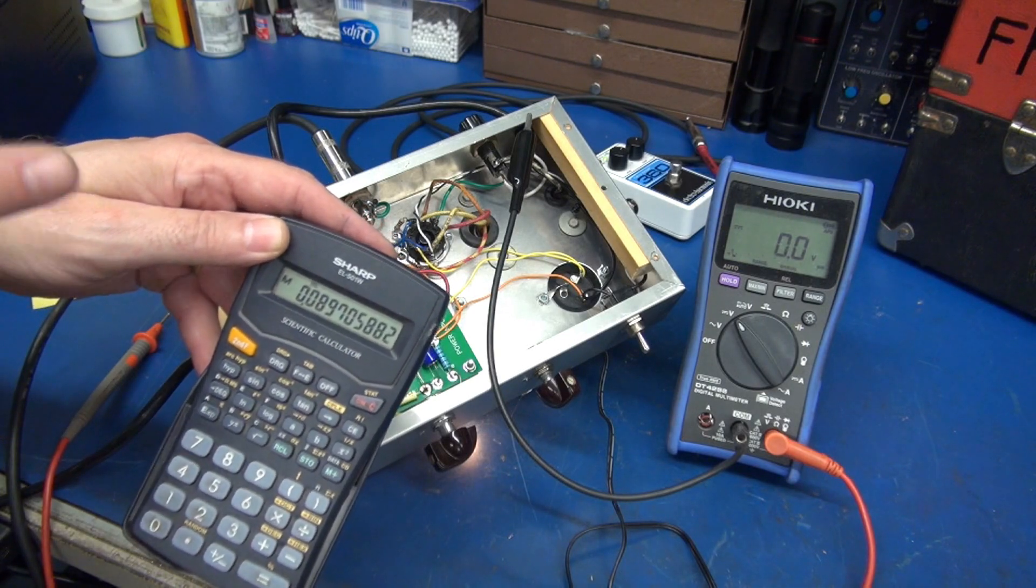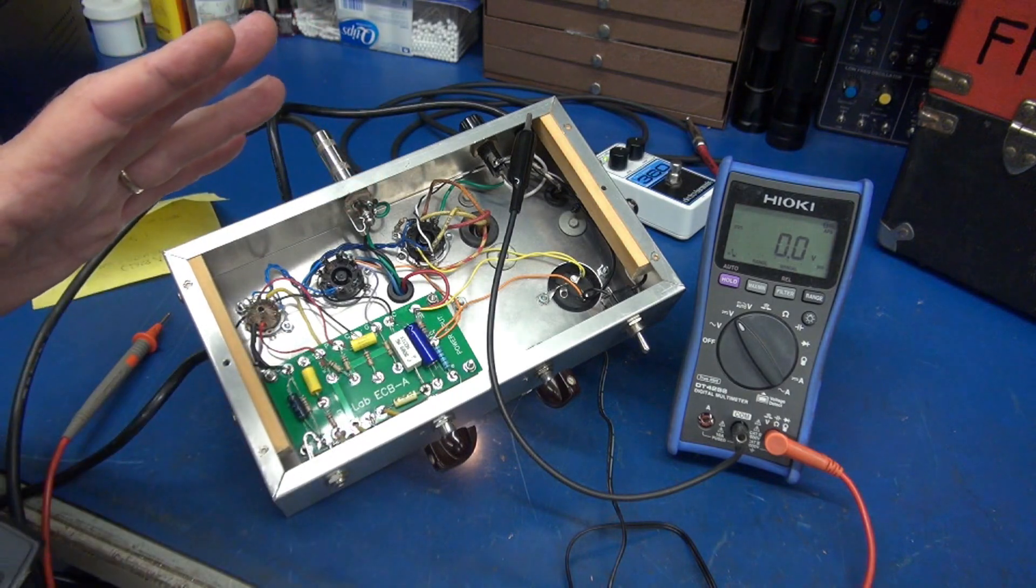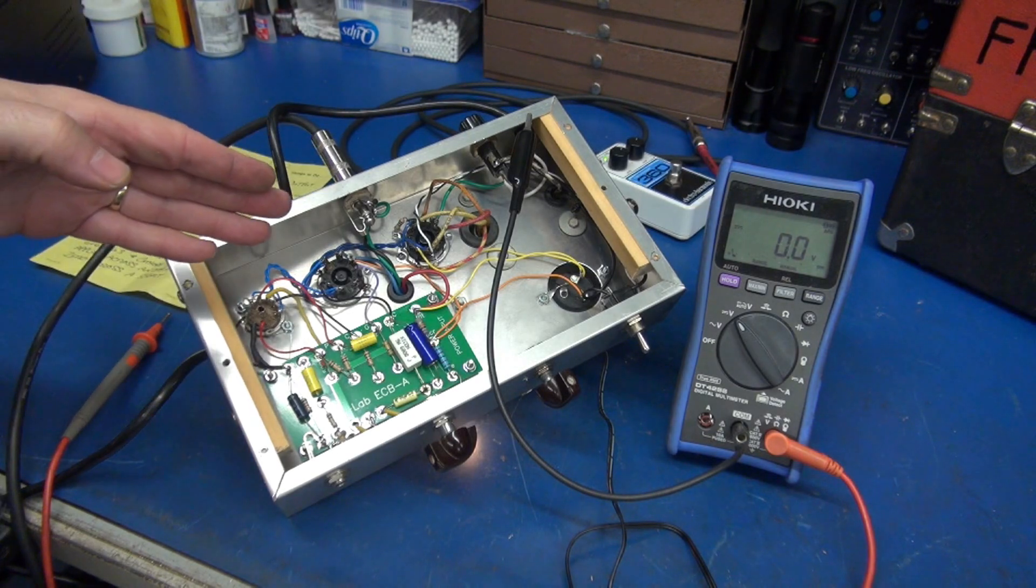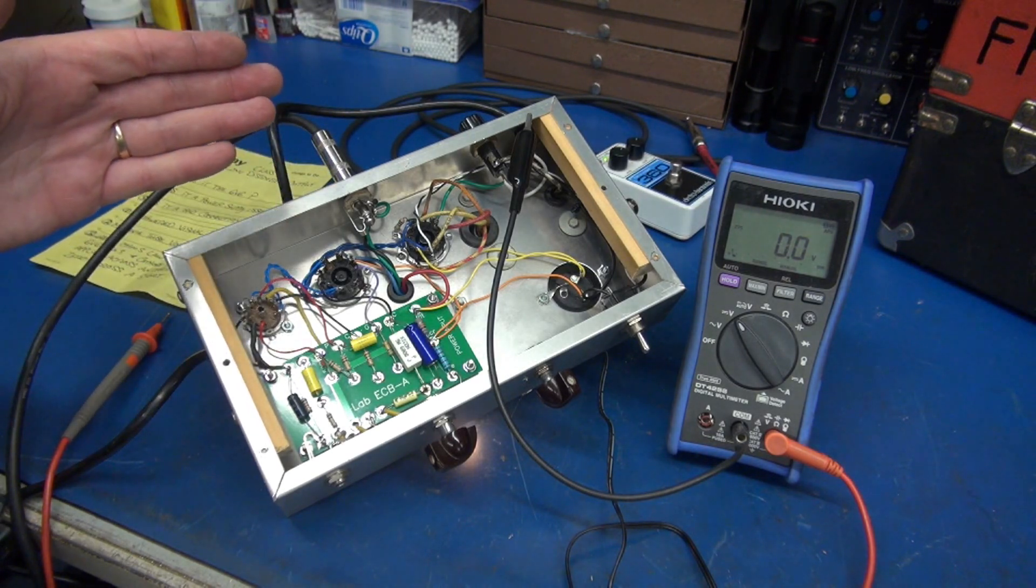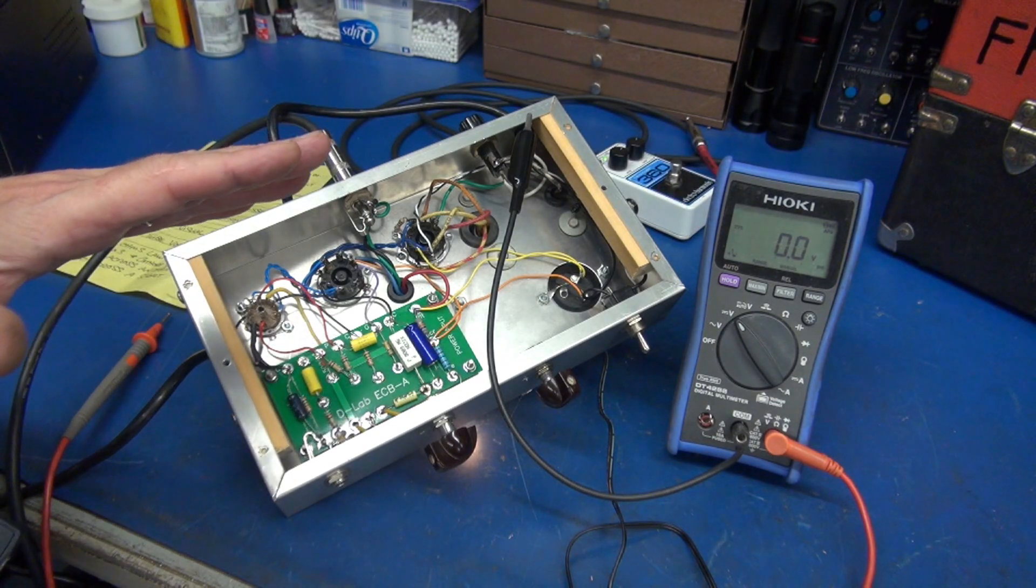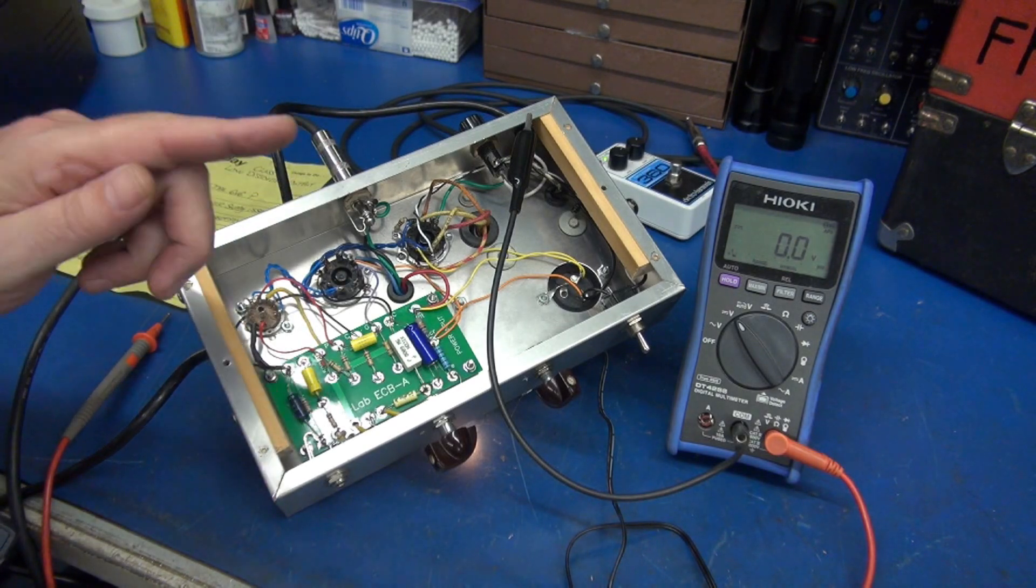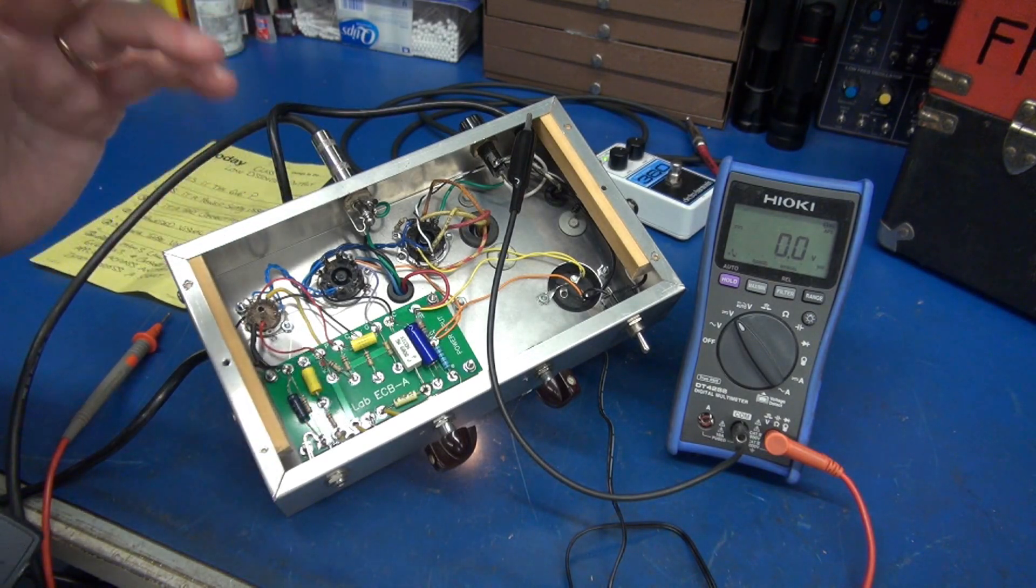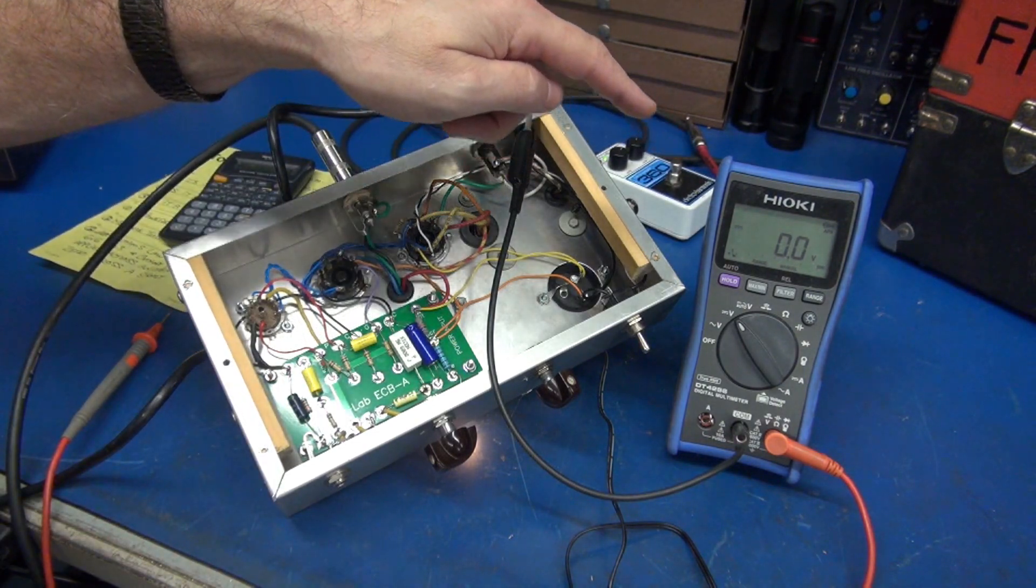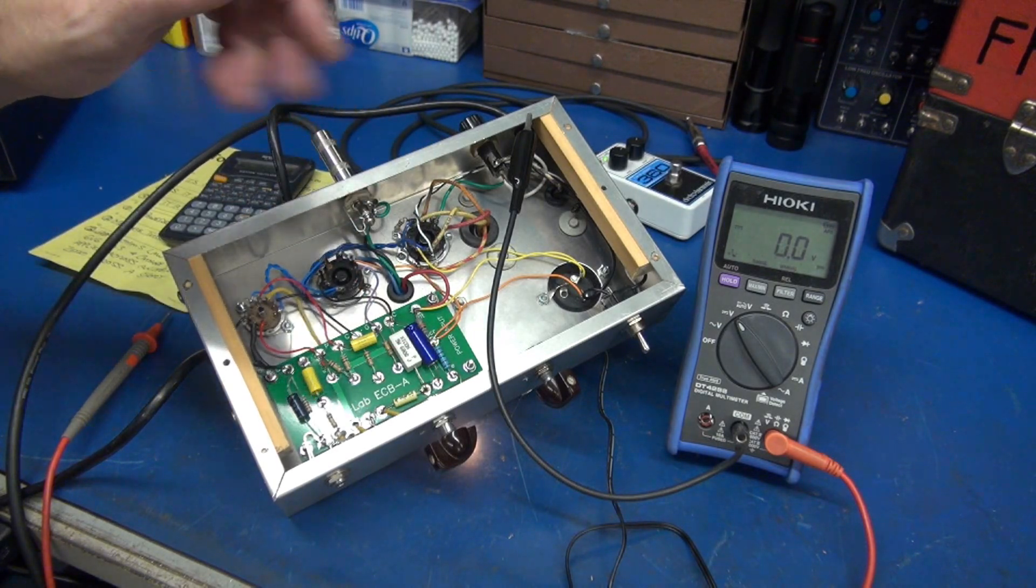Remember our list of things that it could be. Is it the 6V6? Could be, maybe that 6V6 is open, not conducting current. Is it a power supply issue? Well I don't think so because we just checked the power supplies. Is it a bad connection? That could be. So what we're going to do is take our meter and go right across that bias resistor and see what the voltage is.